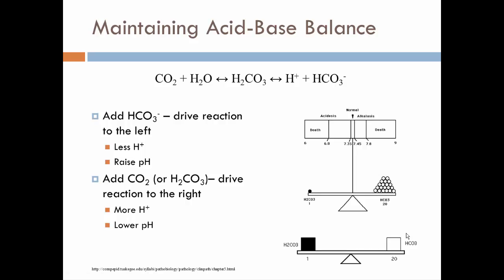Now to maintain acid-base balance, we have to either add bicarbonates or add CO2, or in effect add acid, the carbonic acid, to drive our equation one direction or the other. So you can imagine if I add bicarbonates, this side of the equation goes up, so the equation runs to the left, making more CO2. So effectively I'm removing hydrogen ions and driving the equation to the left. Therefore I have less hydrogen ions and my pH is going to go up.